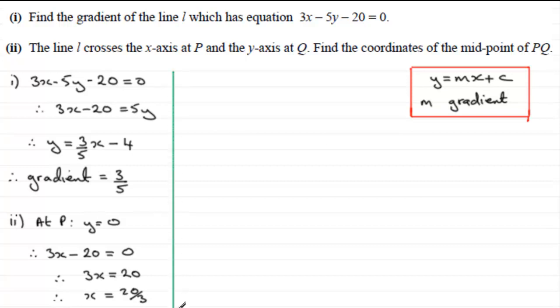Okay now we need to get the coordinates of Q. The line crosses the y-axis at Q, so at Q we would expect the x value to be equal to 0. So if we substitute x equals 0 into here,